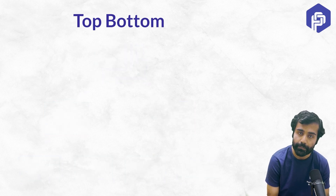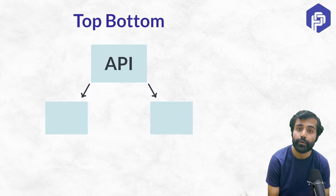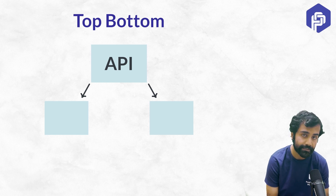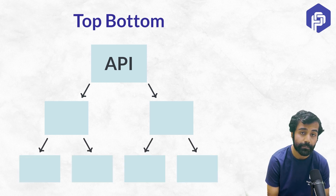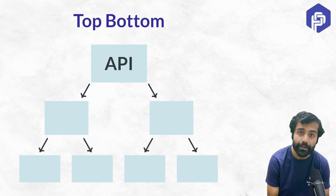Another way of attempting a low-level design question is the top-bottom approach, in which you start right from the top — from the API itself. Then, as and when you need different modules, you create them, taking a call on whether they should be concrete classes or interfaces to support extension. Generally, the top-to-bottom approach is something we recommend, as it allows you to write functionally correct code in a shorter duration compared to the first approach.